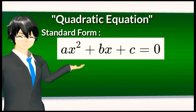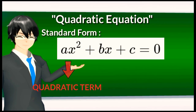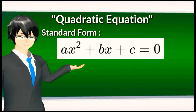We have three types of terms in a quadratic equation. First, ax squared — this is our quadratic term. The next term, bx, is called the linear term. And the last term, c, is called the constant term.